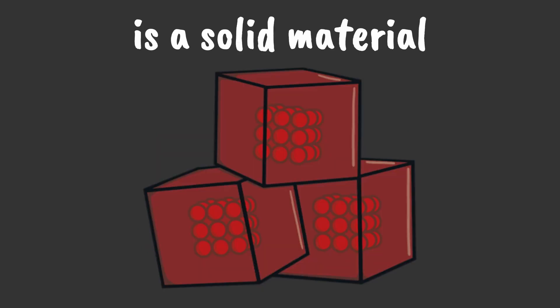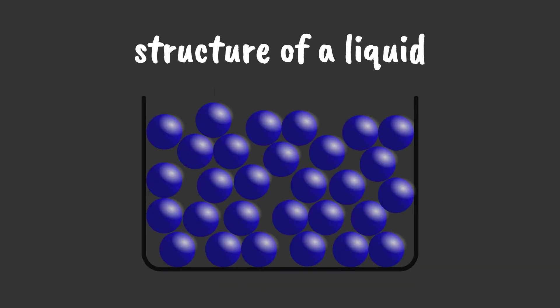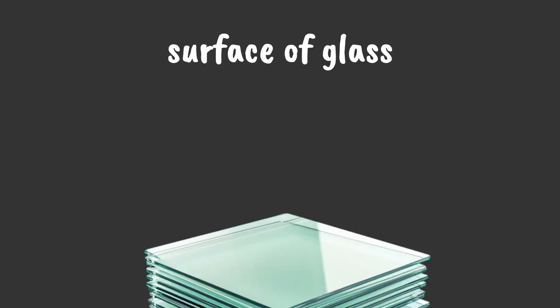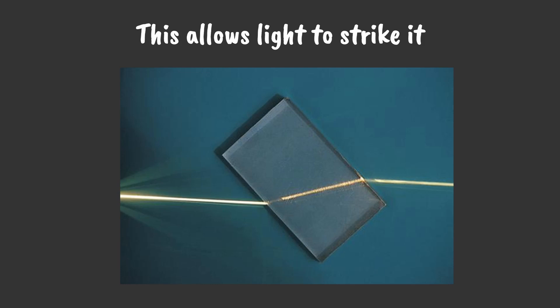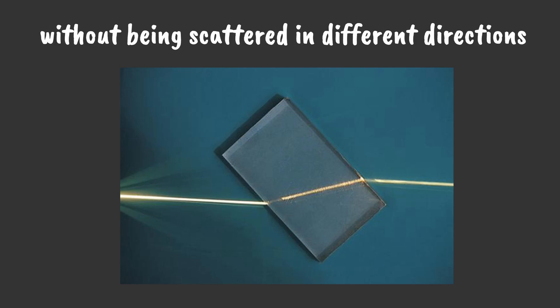An amorphous solid is a solid material that has the chaotic structure of a liquid. This allows the molecules to fill in any gaps, making the surface of glass uniform on a microscopic level. This allows light to strike it without being scattered in different directions.